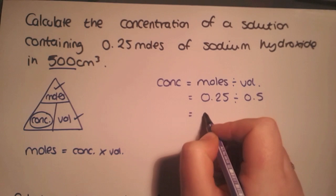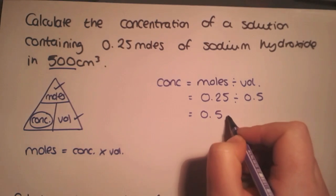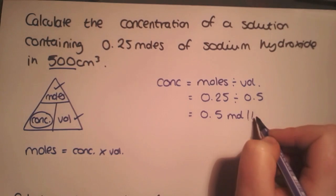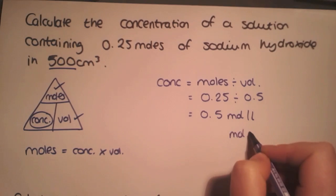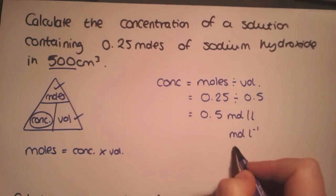And then overall that will give us a concentration of 0.5 moles per litre. You may also see this unit written as moles litre to the minus one, or occasionally as a capital M as well.